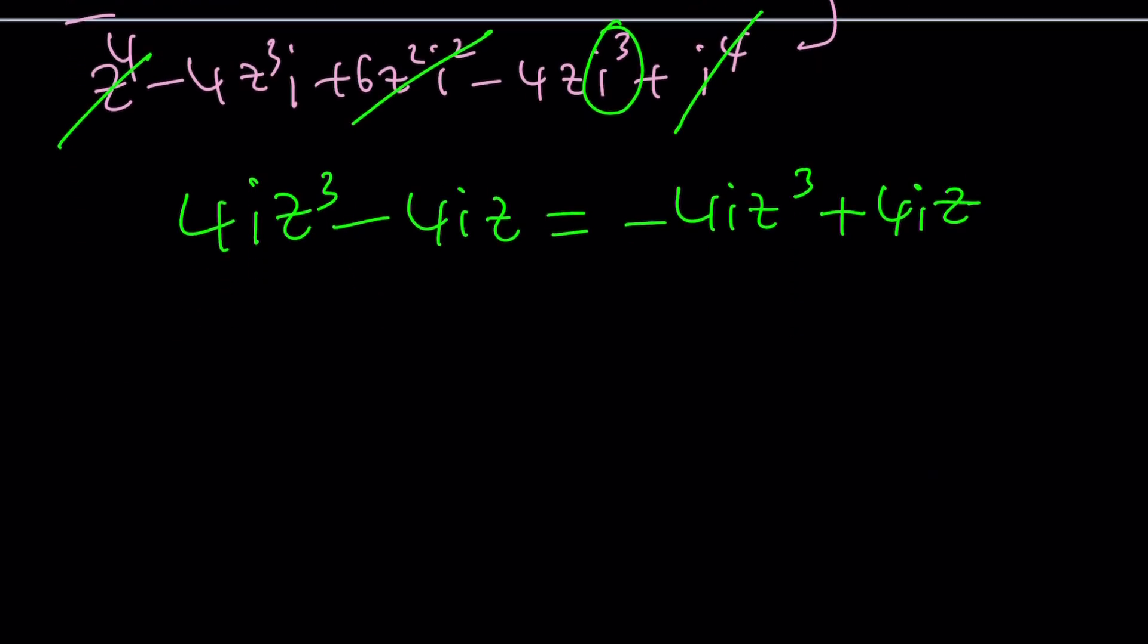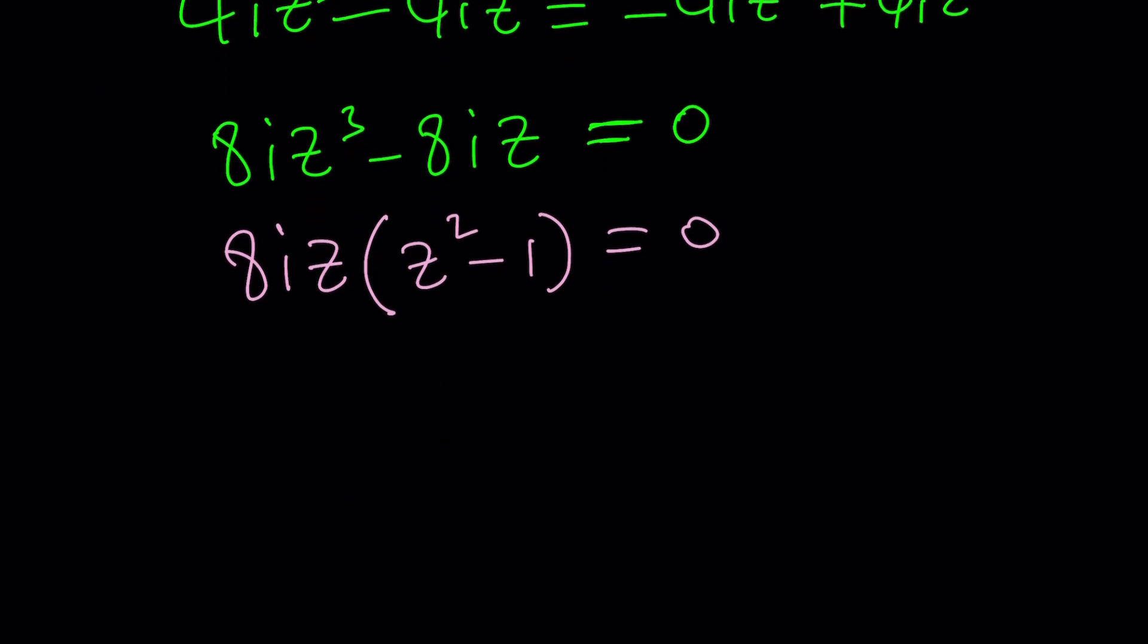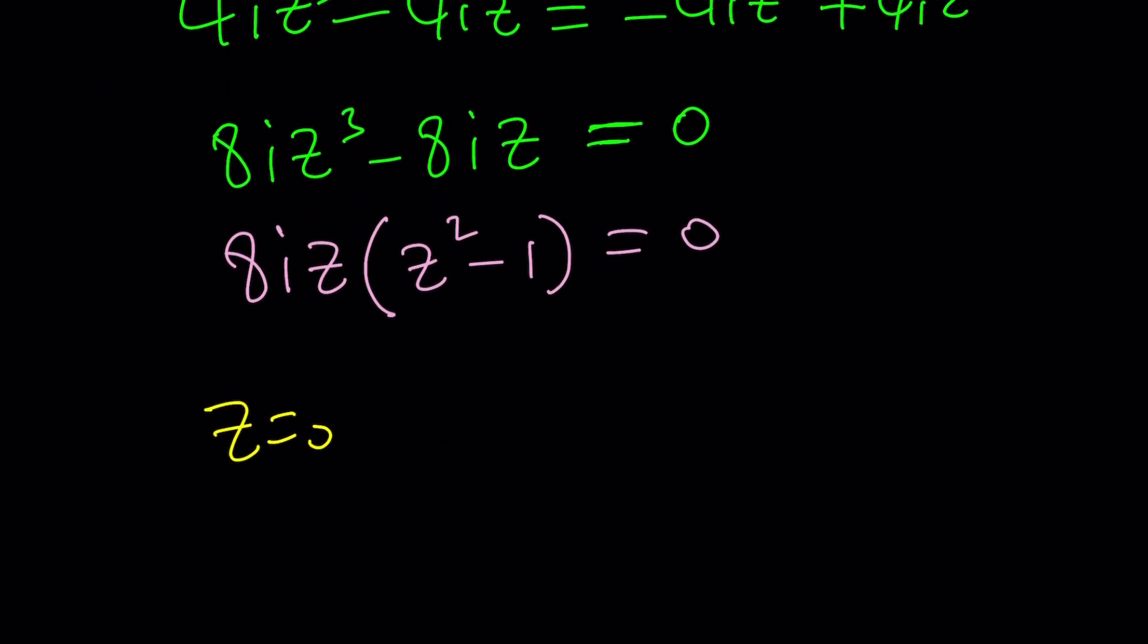Now let's put everything on the same side. 8iz cubed minus 8iz equals zero. Don't you love this? I mean, we didn't have to go into cases. And we're just finding it like a simple equation. Very easy. We can take out 8iz as a common factor. We get z squared minus 1 equals 0. From here we get z equals 0 or z equals 1 or z equals negative 1. As before.